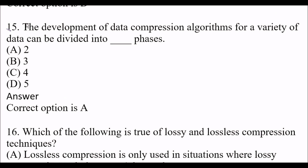Next question: The development of data compression algorithms for a variety of data can be divided into how many phases? Option A: two. Option B: three. Option C: four. Option D: five. The right answer is option A, two. The development of data compression algorithms for a variety of data can be divided into two phases.